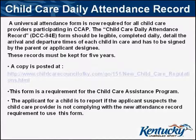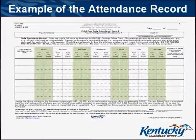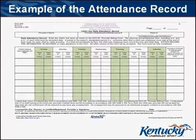A copy of the form is posted at this website. The form is a requirement for the Child Care Assistance Program. The applicant for a child is to report if the applicant suspects the child care provider is not complying with the new attendance record requirements. Here is an example of the DCC 94E, the Child Care Daily Attendance Record.